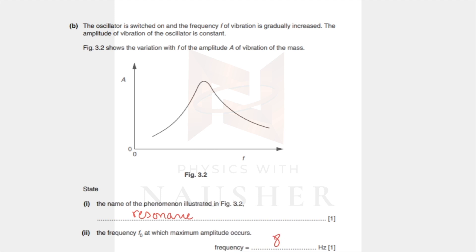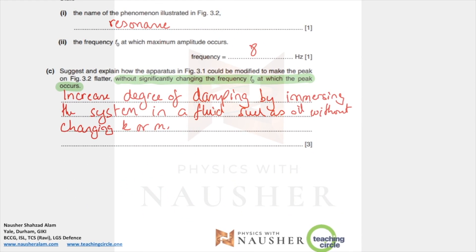Next: suggest and explain how the apparatus could be modified to make the peak flatter without significantly changing the frequency at which the peak occurs. If you don't want to change the frequency, you cannot change k or m because changing k or m would change the frequency. Without changing k or m, you should increase the degree of damping by immersing the system in a fluid, which will not change the fundamental frequency.